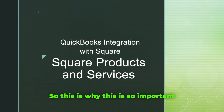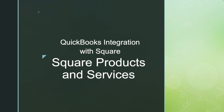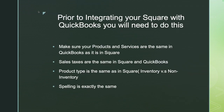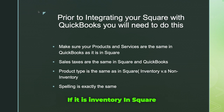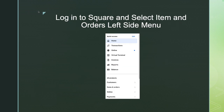Prior to integrating with Square, here's what you need to do: make sure your products and services are the same in QuickBooks as in Square. Sales tax must be the same — I had a client in Canada where a sales tax mismatch was causing problems. The product type must be the same: inventory versus non-inventory. If a product is non-inventory or service in Square, it must be the same in QuickBooks. And spelling must be exactly the same — that includes spaces, commas, and hyphens.